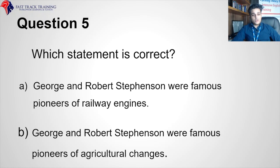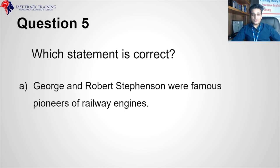Which statement is correct? George and Robert Stevenson were famous pioneers of railway engines, or famous pioneers of agricultural changes? The correct answer is George and Robert Stevenson were famous pioneers of railway engines.